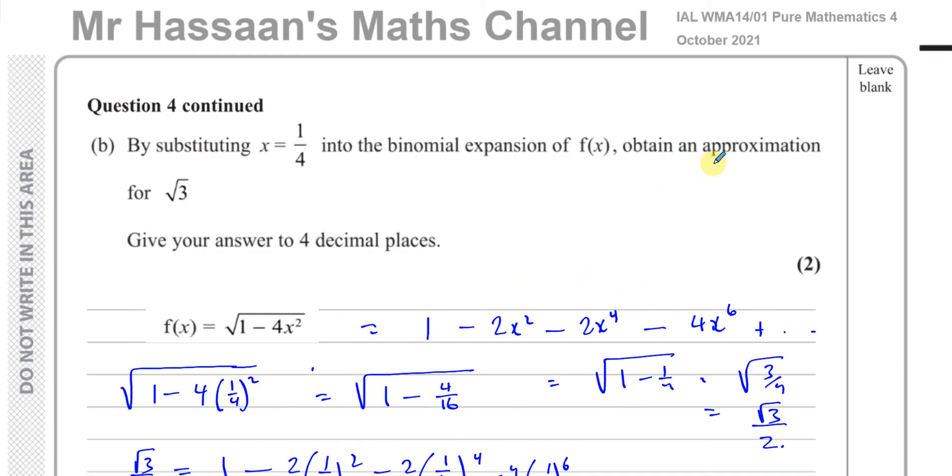That completes this question number four. Thank you for watching. Other questions from this paper can be found on the playlist that should appear over here. Other questions about binomial expansion from P4 can be found in the playlist over here, including the types where you have a number that's not a one here. You can subscribe to my channel by clicking on this link. Thank you for watching and see you soon.